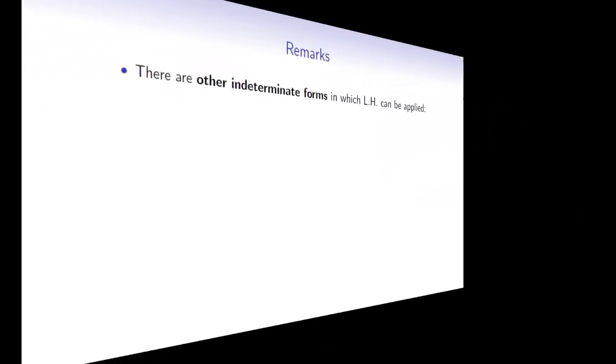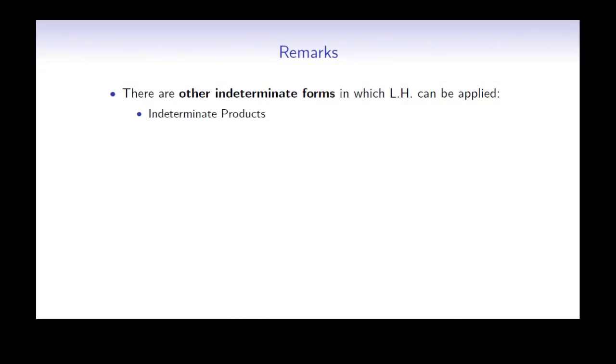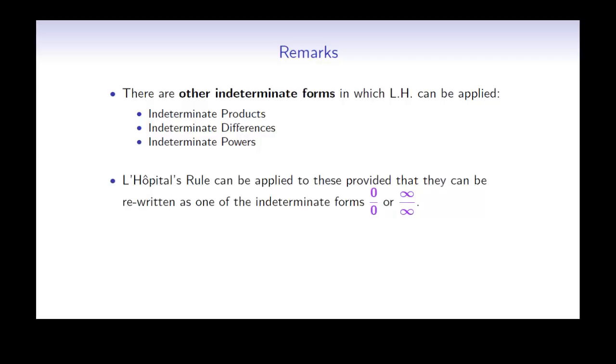Now we've seen examples of using L'Hôpital's rule to evaluate limits of quotients of the form 0 over 0 or infinity over infinity. It is also possible to use L'Hôpital's rule to evaluate other types of limits, provided that you can first rewrite them as a quotient of one of these forms. There are three main categories: indeterminate products, indeterminate differences, and indeterminate powers. L'Hôpital's rule can only be applied to these provided that they can first be rewritten as an indeterminate quotient.